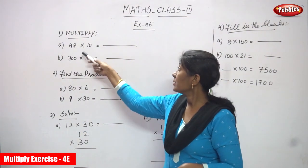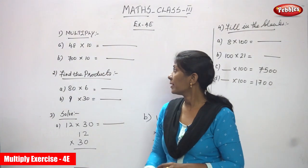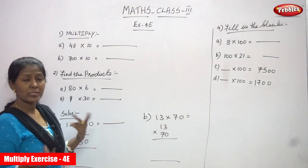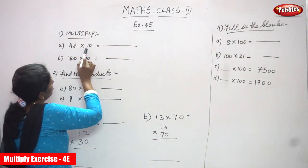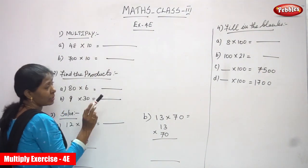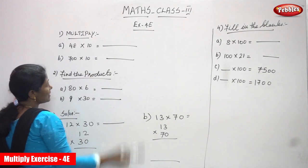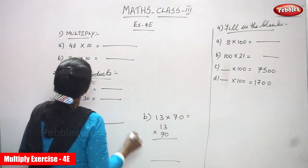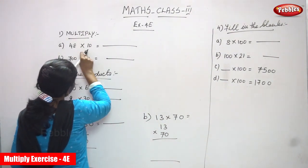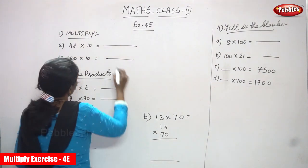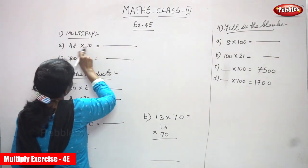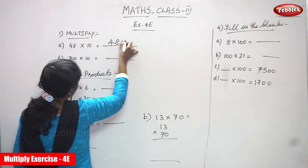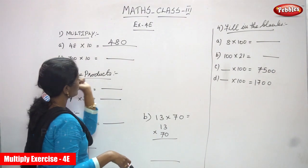Now we are going to see exercise 4.3 and multiply. First we are going to multiply 48 by 10. You must apply the rules — you have to choose any one rule. The first rule: look at the number you are multiplying by 10. Since 10 has only one zero, you write one zero at the end, then multiply the remaining numbers. So 48 into 1 is 48, then add the zero — the answer is 480.